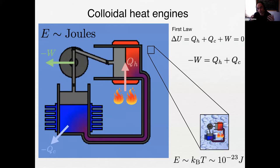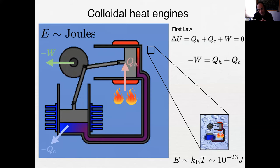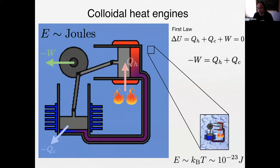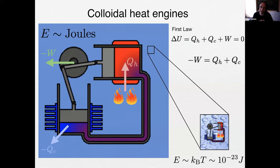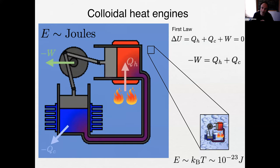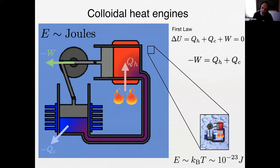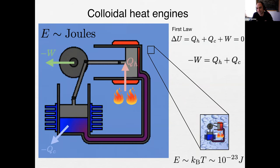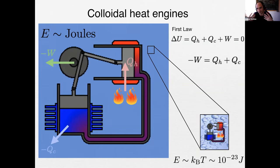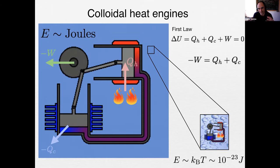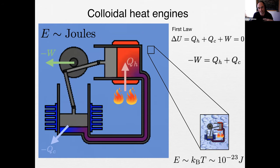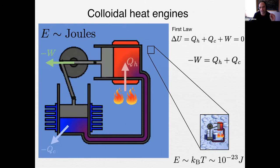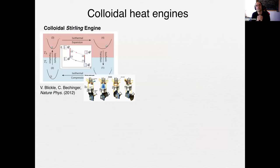The first law for a microscopic engine: the change of energy in a cycle is zero since it's a state function, so the work extracted equals the sum of the heats. Q_h is positive (heat from the hot bath), Q_c is negative (heat dissipated to cold bath). We can only get work if there is an imbalance between the heat fluxes on the two baths. We need two temperatures to extract work from a thermal machine.